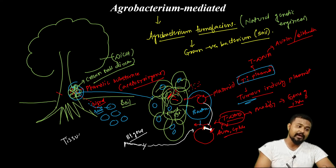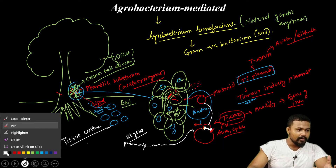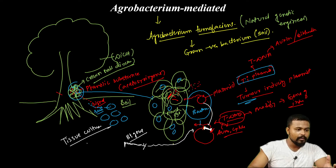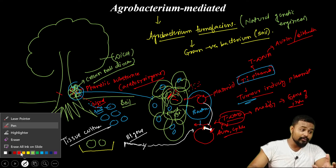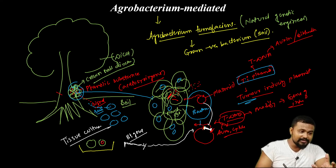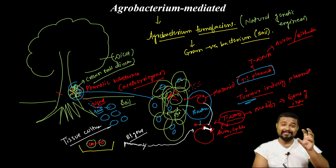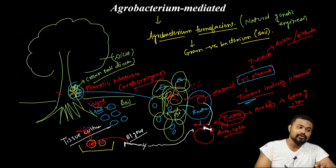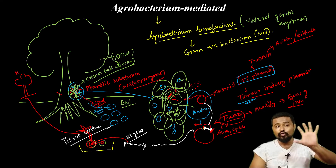Under tissue culture conditions — plant tissue culture — this is a plant cell tool. The plant cell is cultured, and the bacteria with the plasmid carrying the gene of interest is introduced. The gene of interest is inserted so that the plant cell can take it up. Our DNA goes into the plant cell, and finally the transformed plant cell is made.